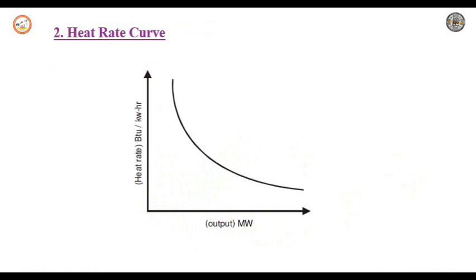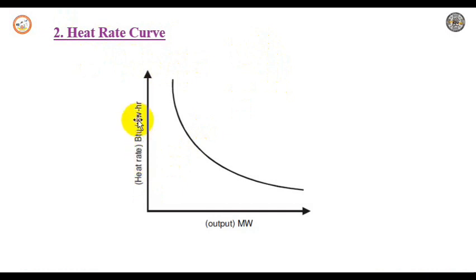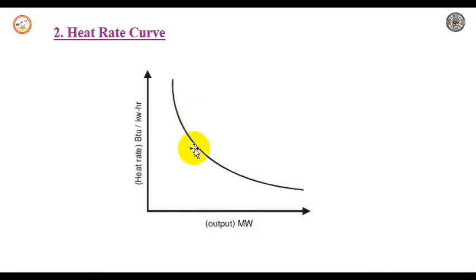Next we have the heat rate curve. The heat rate is the ratio of the fuel input in British thermal units to the energy output in kilowatt hour. It is actually the slope of the input-output curve at any point.